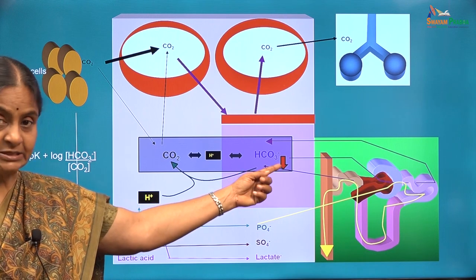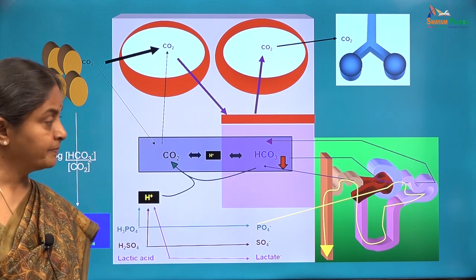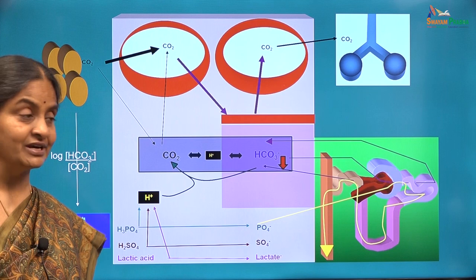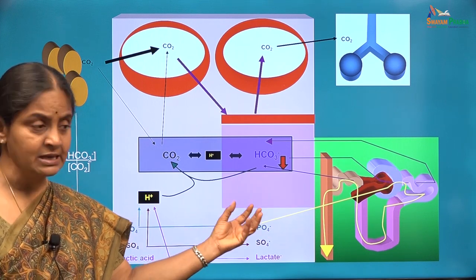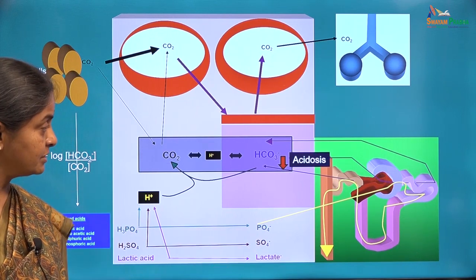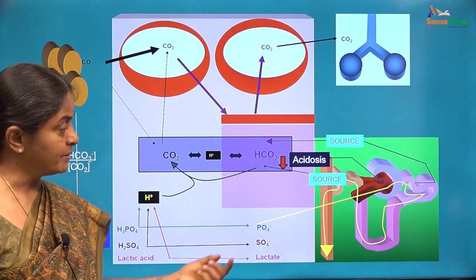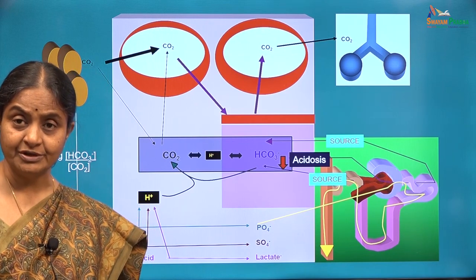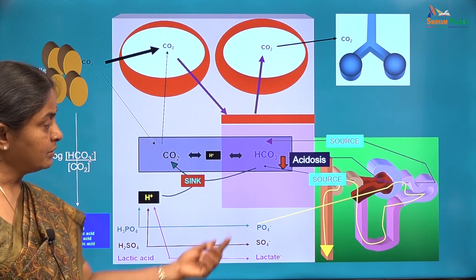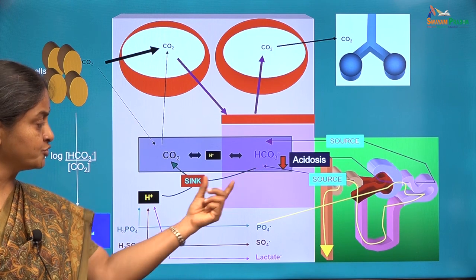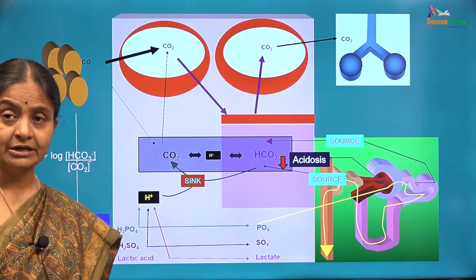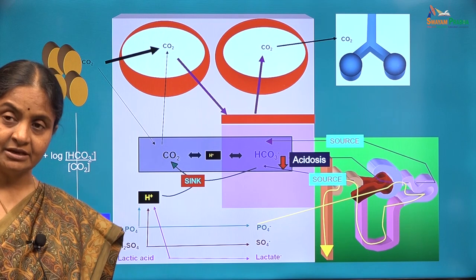We will now consider changes in plasma pH due to changes in bicarbonate. A reduction in bicarbonate causes acidosis. A decrease in bicarbonate could come about either due to reduced formation in the kidney, reduced reabsorption in the proximal tubule, or reduced generation in the distal tubule, or the bicarbonate concentration can reduce because of increased consumption by the fixed acid protons. The answer is that all of these are real causes for reduction in plasma bicarbonate.